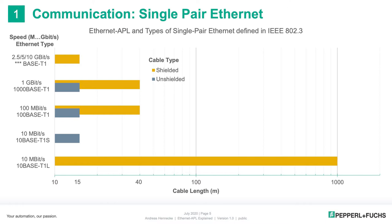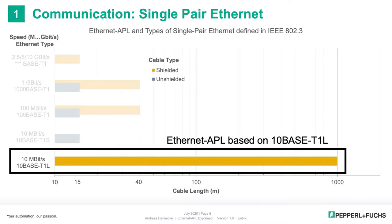Today, five subchapters of the IEEE standard define Ethernet communications on a two-wire cable for different speeds and cable lengths. Ethernet APL utilizes 10-base T1L — 10 for the speed of 10 megabits per second, T1 for the single-pair cable, and L for long cable lengths of up to 1 kilometer. Ethernet APL incorporates 10-base T1L to enable the cable lengths required in the field of a process plant. Additional attributes enable interoperability of devices from multiple vendors on the network.